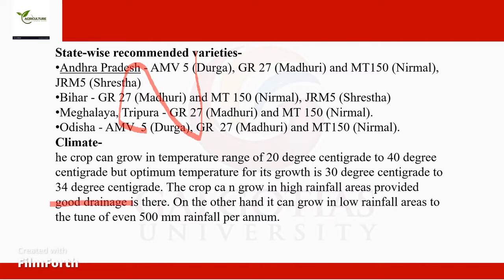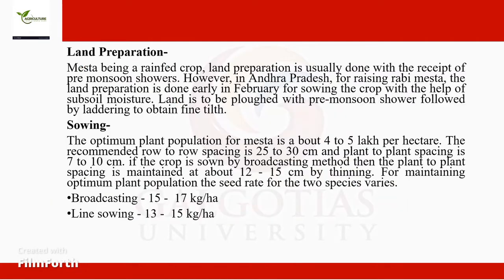On the other hand, mesta can also grow in low rainfall areas, down to even 500 millimeters of rainfall per annum. So the lowest amount of rainfall required by the mesta crop is 500 millimeters per annum.